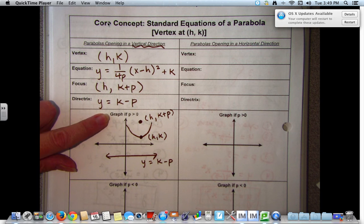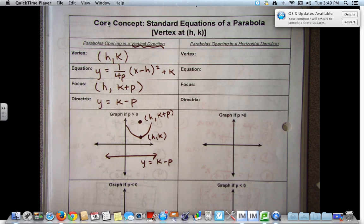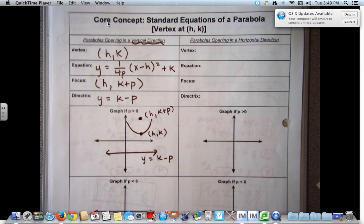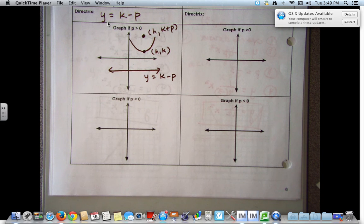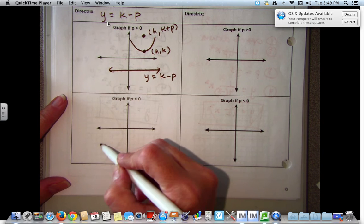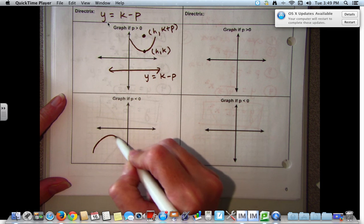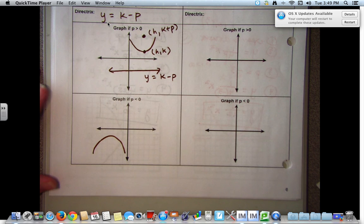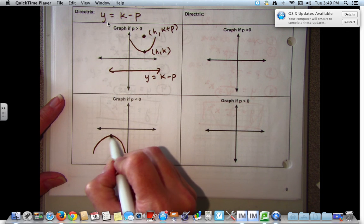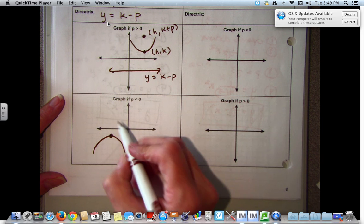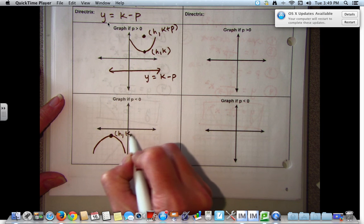This graph is if p is greater than 0. Now we'll look at the graph if p is less than 0. So our parabola would face down. Our vertex is at our maximum and our vertex is h, k.